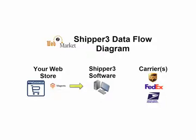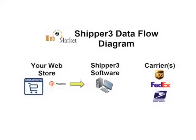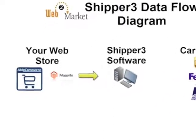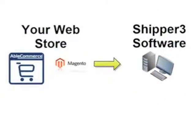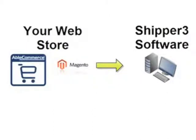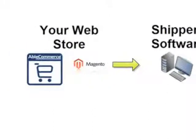Shortly we'll be looking at a live demonstration of Shipper, but first let's take a quick look at the data flows between your web store, Shipper, and your carrier. First, Shipper contacts your web store — whether that's AbleCommerce, Magento, or some other shopping cart — and pulls down order information.